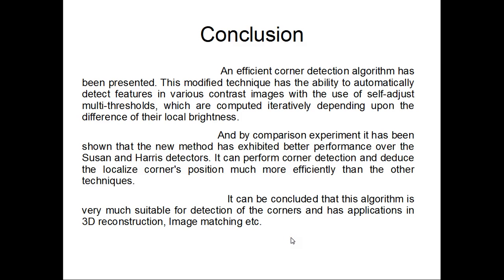As a result, we will have to conclude that an efficient corner detection algorithm has been presented in this, which is the modified Susan algorithm. This modified technique has the ability to automatically detect features with various contrast images with the use of self-adjusted multi-thresholds, which are computed iteratively depending upon the difference of their local brightness. The comparison experiment has been shown that the new method has exhibited better performance over Susan and Harris detectors. It can perform corner detection and deduce the localized corners position much more efficiently than the other techniques. It can be concluded that this algorithm is very much suitable for detection of the corners and has various applications in 3D reconstruction, image matching, etc. Thank you.